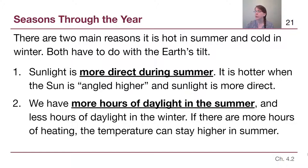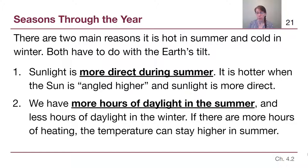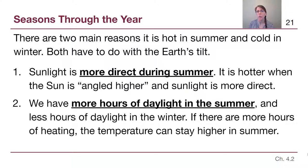We have maybe up to 15 hours of daylight during the summer and maybe down to nine hours of daylight during the wintertime. If we have the sun in the sky for longer, the temperature can stay higher because it's heating the ground for a longer period of time and heating it more effectively — going back to the first point. So that's what we're going to be exploring, because I don't want to just tell you these things and have you memorize them without understanding them. We want to make sure we know what's actually happening that causes that.